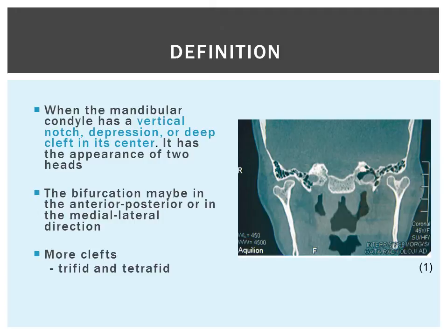The bifurcation can be either in the anterior-posterior or in the medial-lateral direction. If it has more clefts or bifurcations, they would be called a trifed or tetrafed depending on the number.